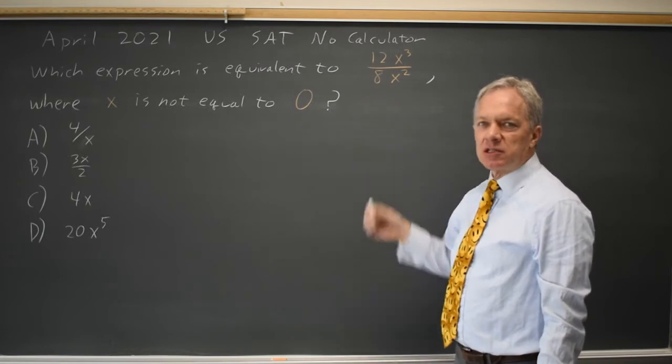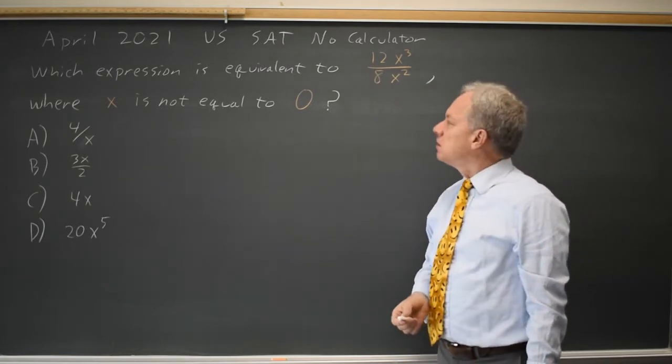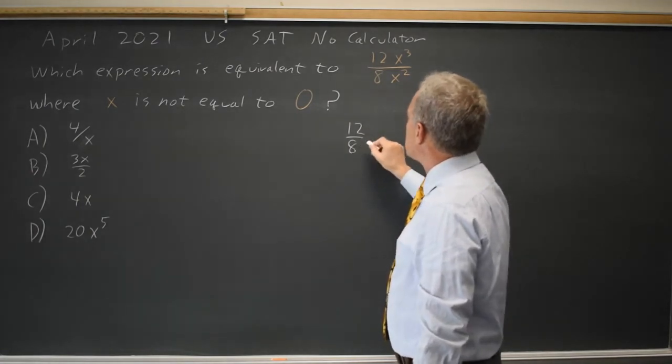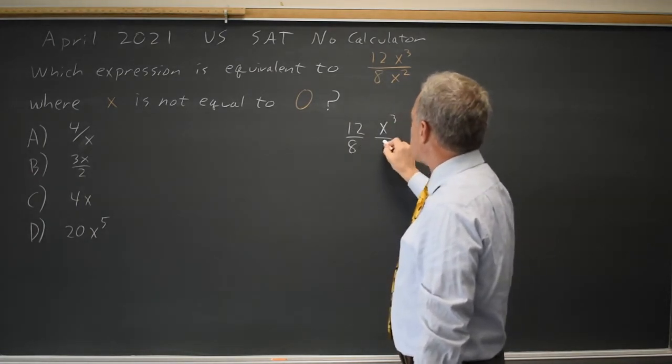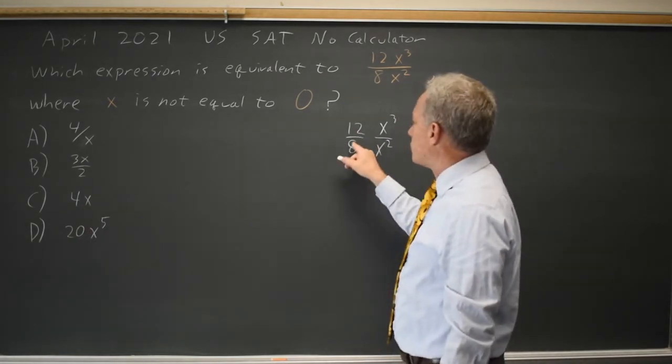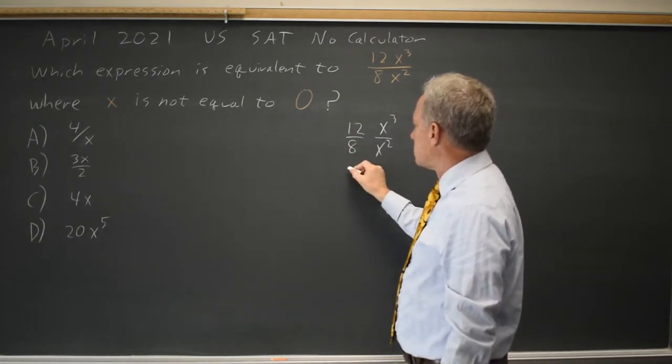We have 12x cubed over 8x squared and the formal way of doing this is we have 12 over 8 times x cubed over x squared. 12 over 8 simplifies as 4 times 3 over 4 times 2, so 3 halves.